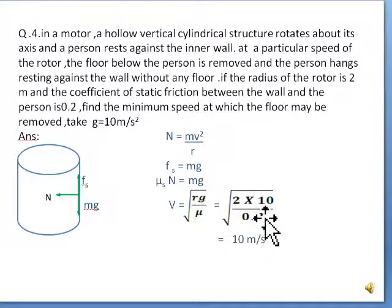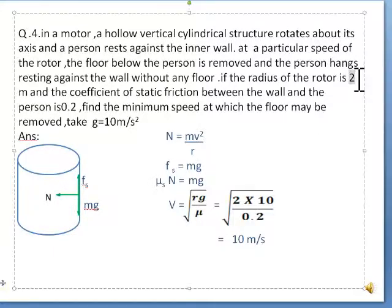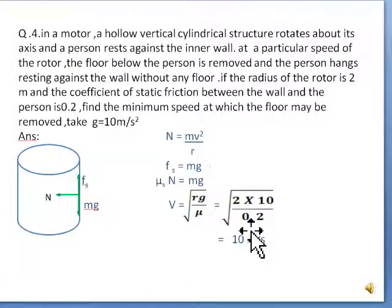So we will get velocity V = √(Rg/μ). R is given 2 meter, g is given 10 m/s², μ is 0.2. By calculating we will get 10 m/s.